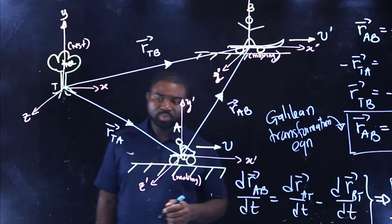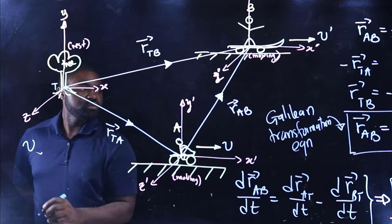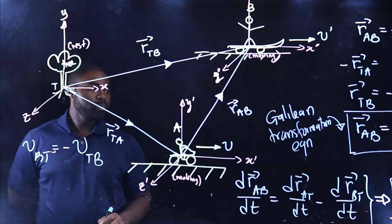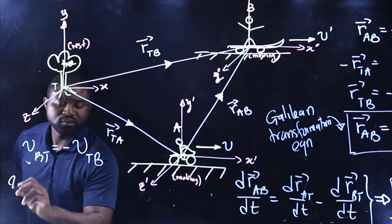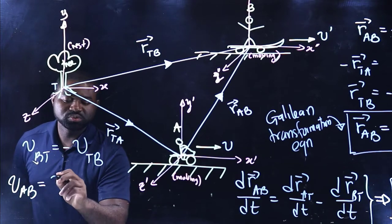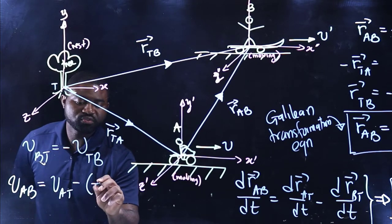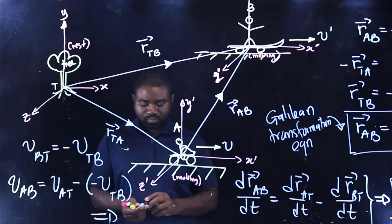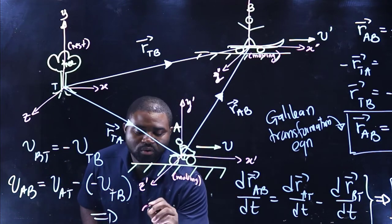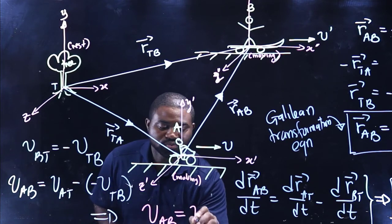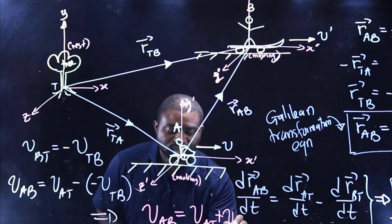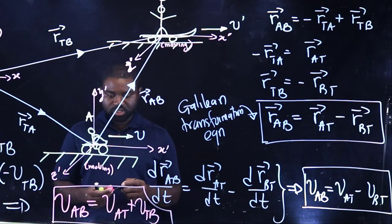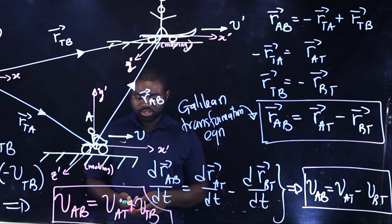But we know that V-B-T is equal to minus V-T-B. So this means that V-A-B will be equal to V-A-T minus V-T-B, which gives us V-A-B equals V-A-T plus V-T-B. This right here is called the law of addition of velocities.